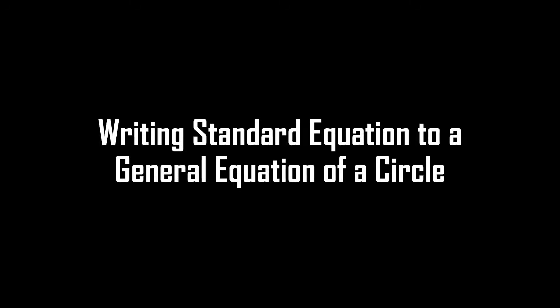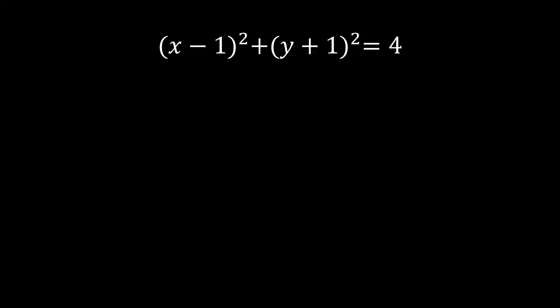Let's talk about writing a standard equation to a general equation of a circle. Let's start with this standard equation: (x minus 1) raised to the power of 2, plus (y plus 1) raised to the power of 2, equals 4. How do we convert this one into general form or general equation of a circle?